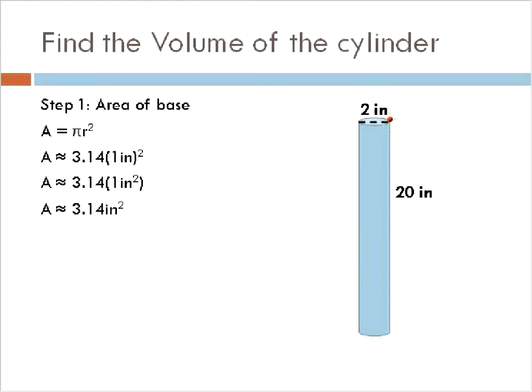Now, step two is to find the volume. We're going to multiply the area of this circle times all the way down to the bottom. The area times the height is the formula for volume. So I took the area from up here, 3.14 inches squared, and multiply that times 20 inches. 3.14 times 20 gives us 62.8, and inches squared times inches gives us inches cubed, or inches to the power of three. That's going to be our final answer for the volume of this crazy looking cylinder.